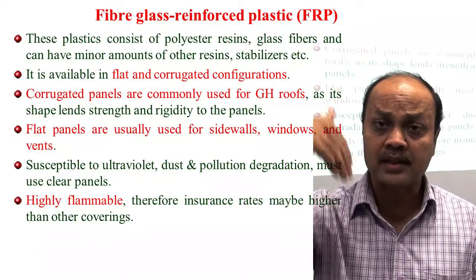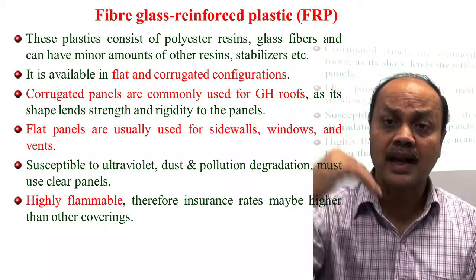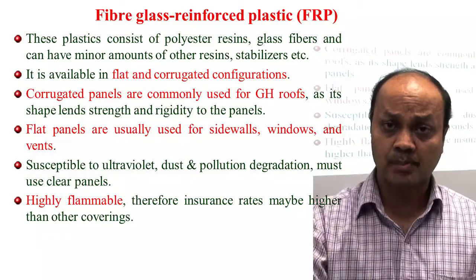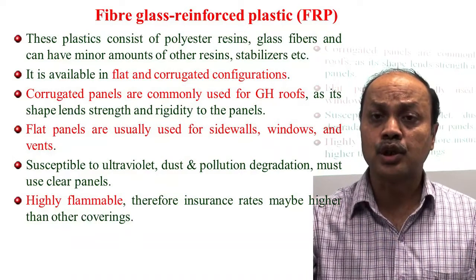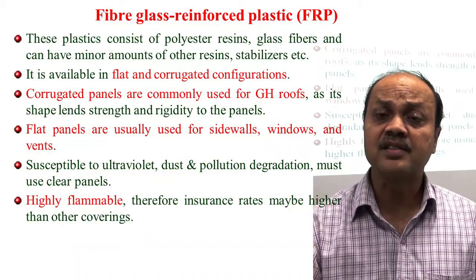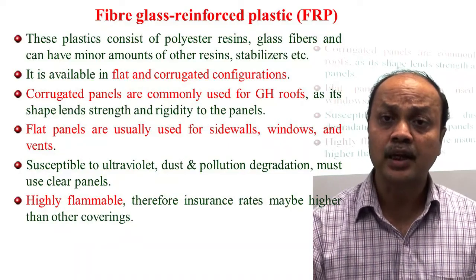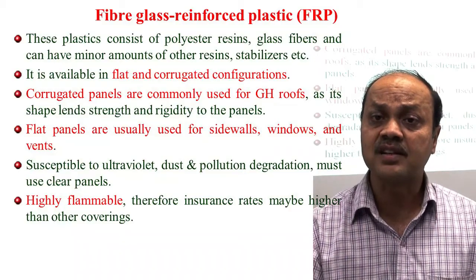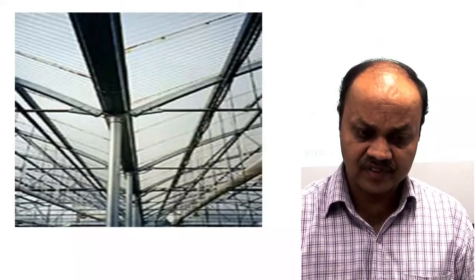For all cladding materials, it is important to monitor how dust and other factors affect light transmissivity over time. Due to dust, chemical changes, and wear, light intensity inside the greenhouse decreases with time. If pollution is occurring, you need to regularly check how light intensity is changing.